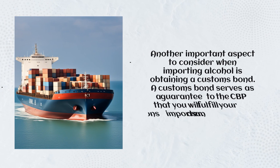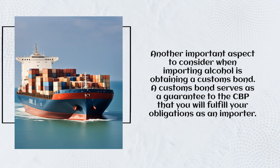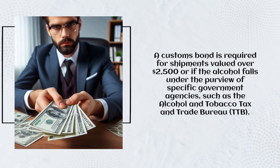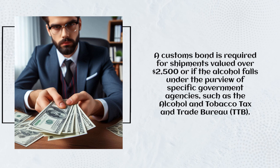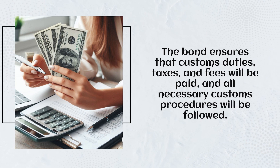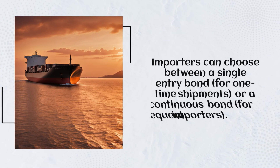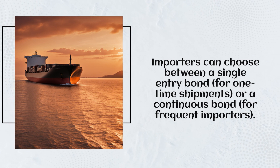Another important aspect to consider when importing alcohol is obtaining a customs bond. A customs bond serves as a guarantee to the CBP that you will fulfill your obligations as an importer. A customs bond is required for shipments valued over $2,500 or if the alcohol falls under the purview of specific government agencies, such as the Alcohol and Tobacco Tax and Trade Bureau, TTB. The bond ensures that customs duties, taxes, and fees will be paid, and all necessary customs procedures will be followed. Importers can choose between a single entry bond for one-time shipments or a continuous bond for frequent importers.